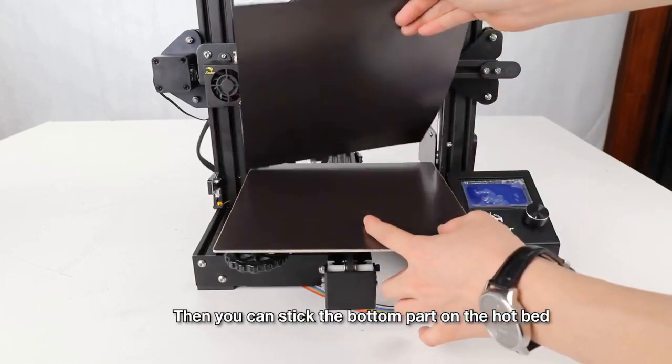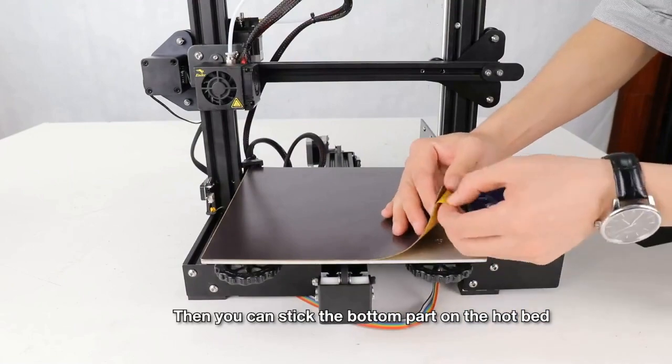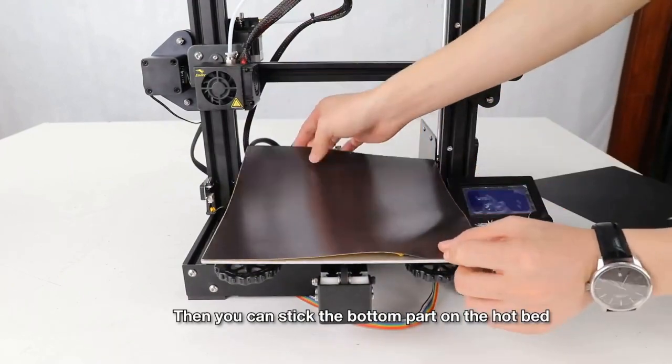Simply print on the surface, remove the upper magnetic surface from the lower, bend the flexible surface and watch the model fall right into your hands.